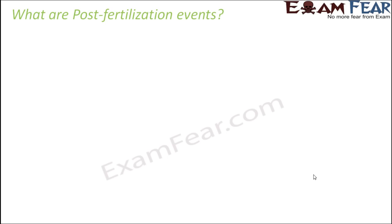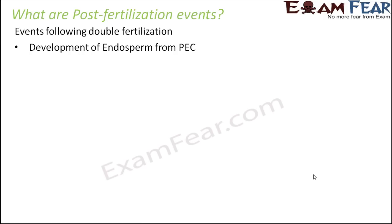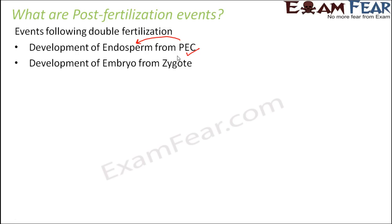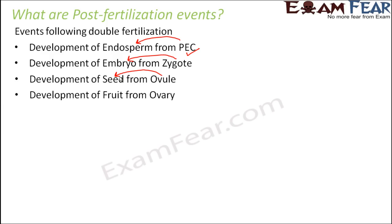Post-fertilization events are the events which follow the double fertilization process. Here we will see how the endosperm is developed from the PEC — the product of fertilization — and how the PEC develops into endosperm after fertilization. We will also see how the zygote develops into embryo, how the ovule develops into a seed, and how the ovary changes into a fruit.